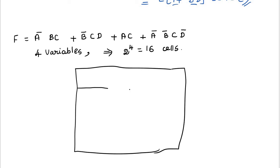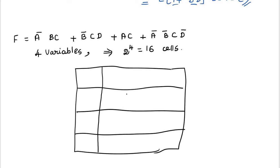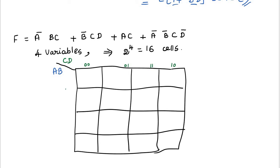The K-map rows are labeled A'B', A'B, AB, AB' and the columns are C'D', C'D, CD, CD'. I have to place 1s for each term: A'BC — A'B row, C column (CD or CD'). B'CD' — B' rows, CD' column. AC — A rows, C columns. A'B'CD' — A'B' row, CD' column.